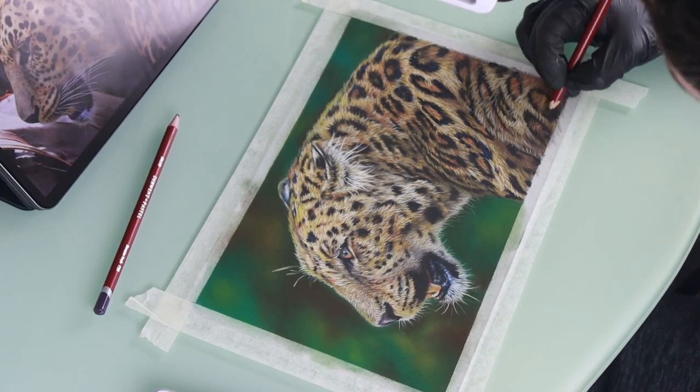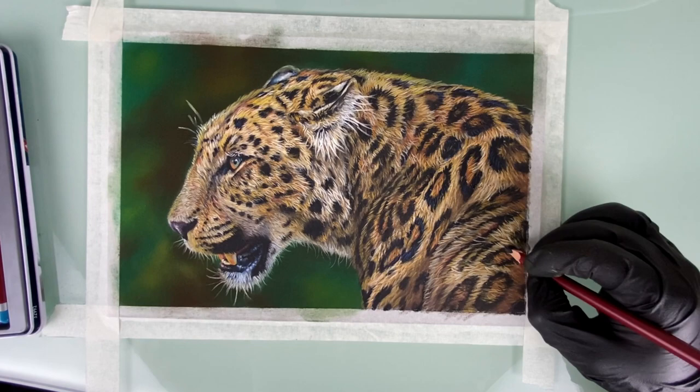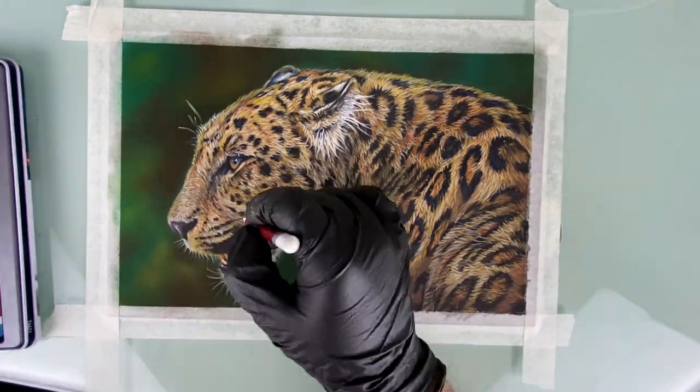And this is then pretty much it. I'm just refining the drawing now, add the whiskers with the white pencil and that's basically done.